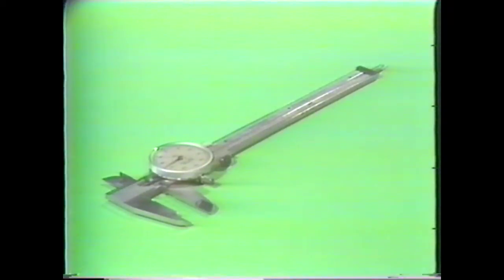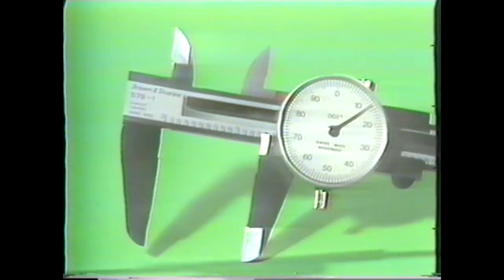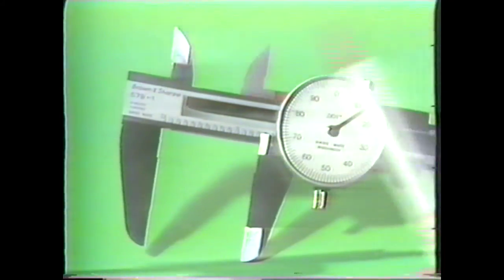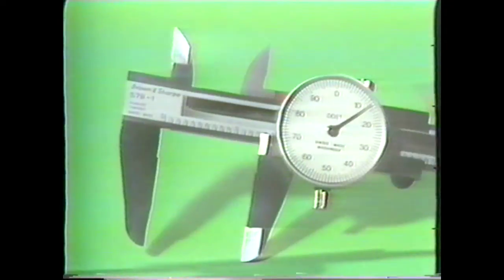Another variation of the vernier caliper is the dial caliper. This instrument can measure internal, external, and depth dimensions. The dial caliper has inches and hundred thousandth graduations on the beam. The thousandth readings are taken from the dial.